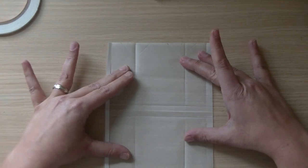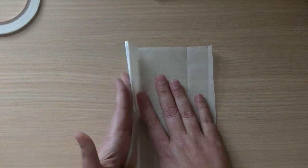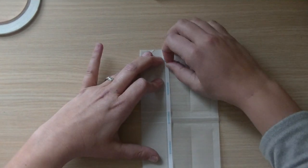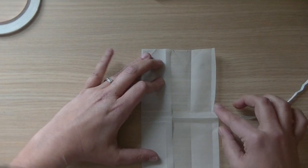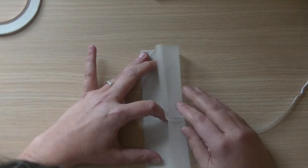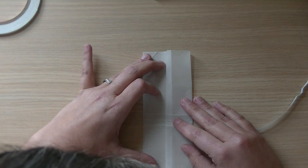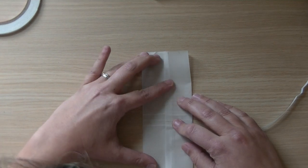Then you fold it open, like this, fold it flat, fold the sides inwards, take off the backing, and then glue it shut like this.